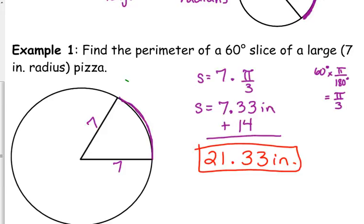Pretty simple, right? Yes, ma'am. Because, the S was just the crust of the pizza. It wanted the perimeter of this whole slice. So, it's the crust plus the two sides.